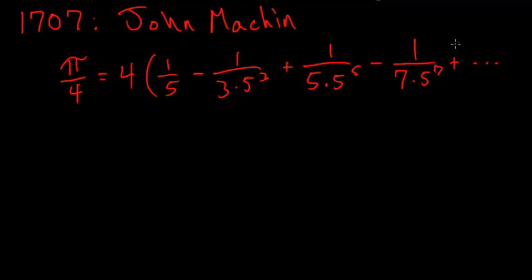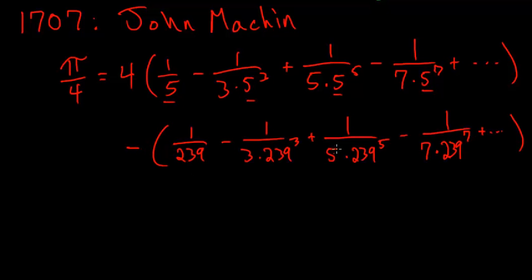The next term would be 1 divided by 9 times 5 to the ninth and from this he subtracts another infinite sum and this next infinite sum looks just like this one except everywhere you see this 5 here you replace it with the number 239. Everywhere there was a 5 here you replace it with the number 239 and Machin, using this formula for pi, was able to find 100 digits of pi.